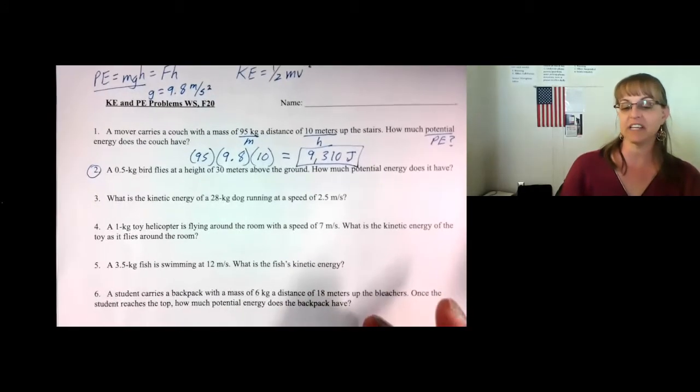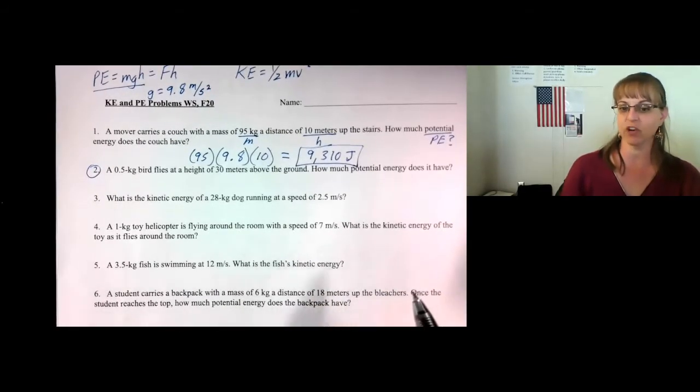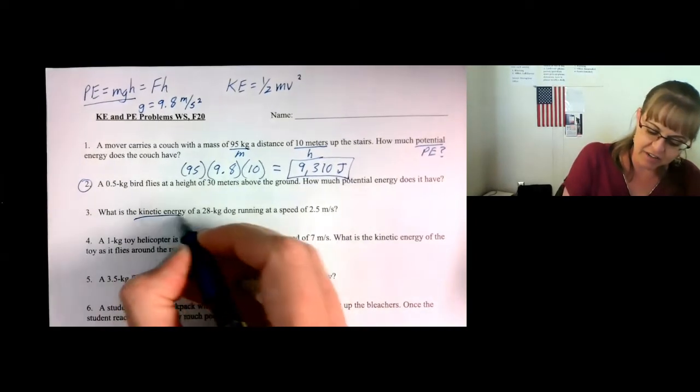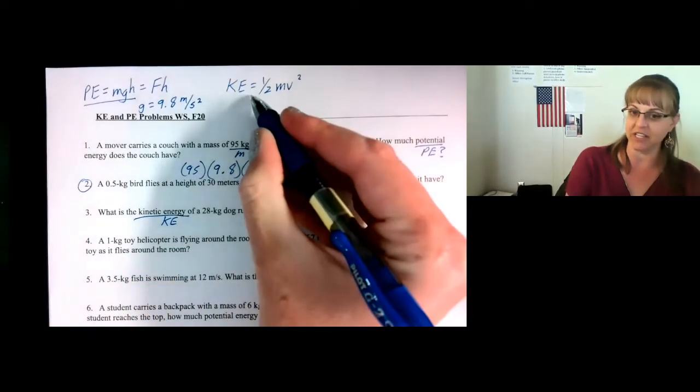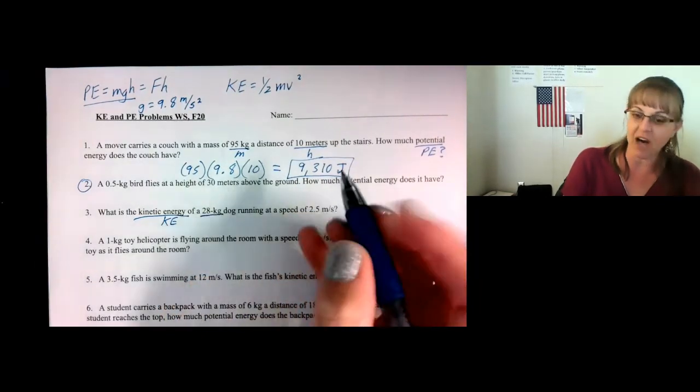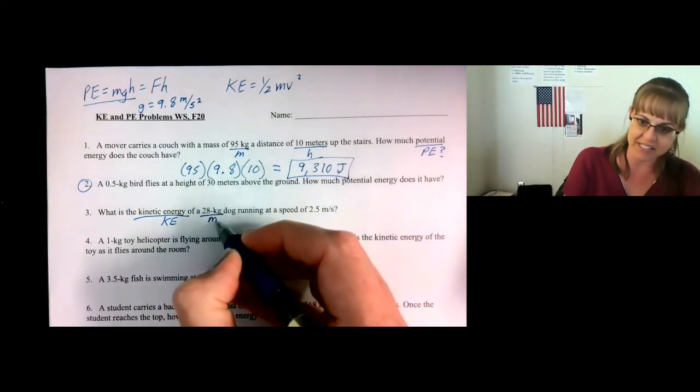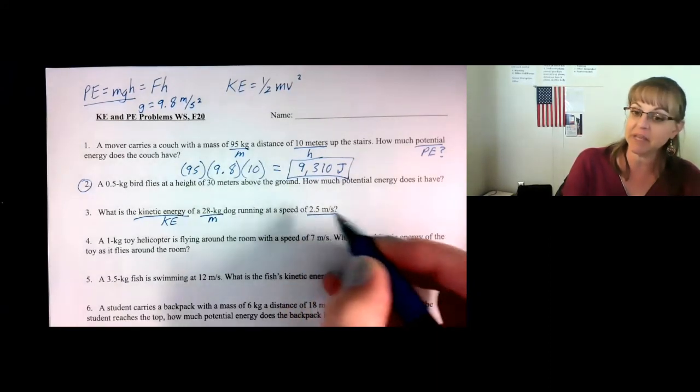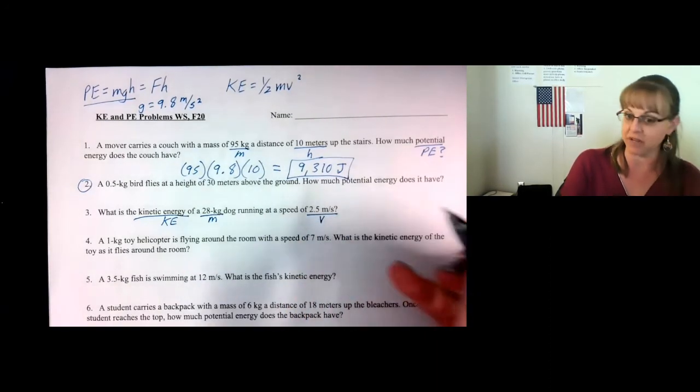Number three. What is the kinetic energy of a 28-kilogram dog running at a speed of 2.5 meters per second? So they are asking for kinetic energy, so we'll be using this formula. They told you it was a 28-kilogram dog. Kilograms is mass. And a speed of 2.5 meters per second. Speed and velocity are pretty much the same thing.